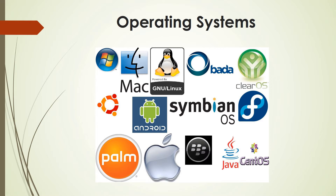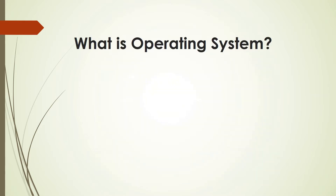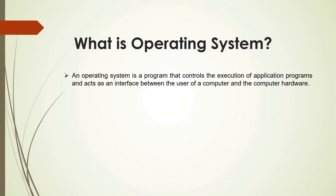For a non-technical person, the definition of an operating system is something like this: an operating system is a program that controls the execution of application programs and acts as an interface between the user of a computer and the computer hardware. It is acting as an interface — specifically, the graphical user interface that is available to the user.